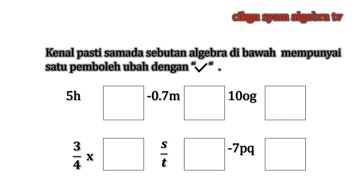Mari kita tandakan dengan satu pembeli ubah iaitu 5H, 0.7M, dan 34X. Lepas ini kita akan membincangkan tentang ungkapan ajibah.